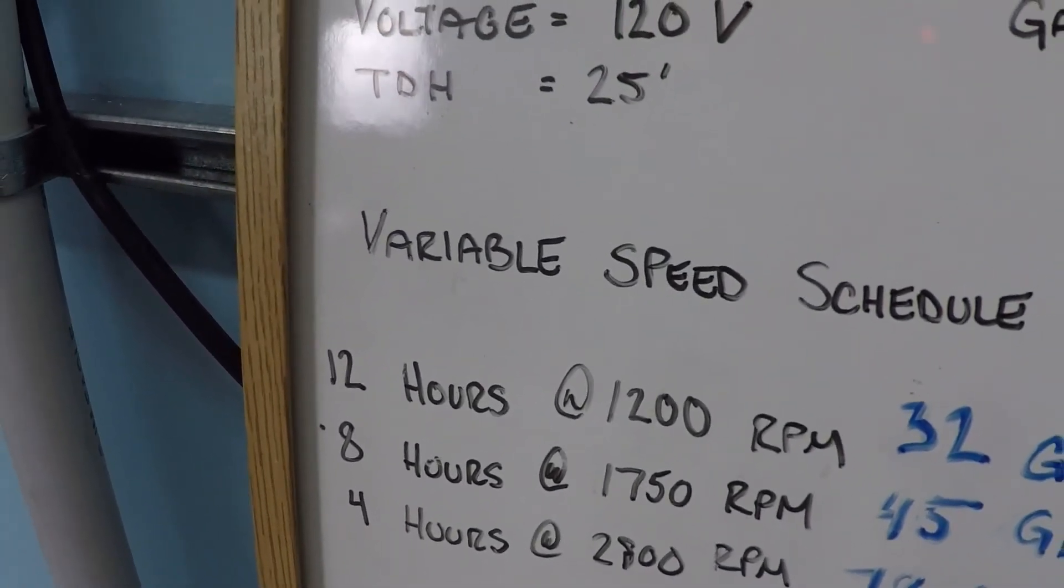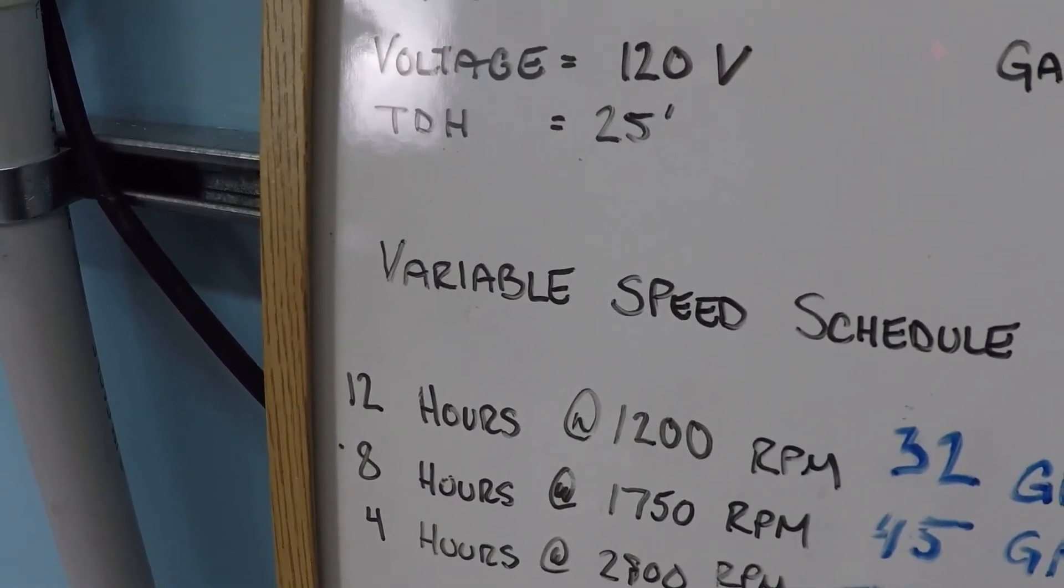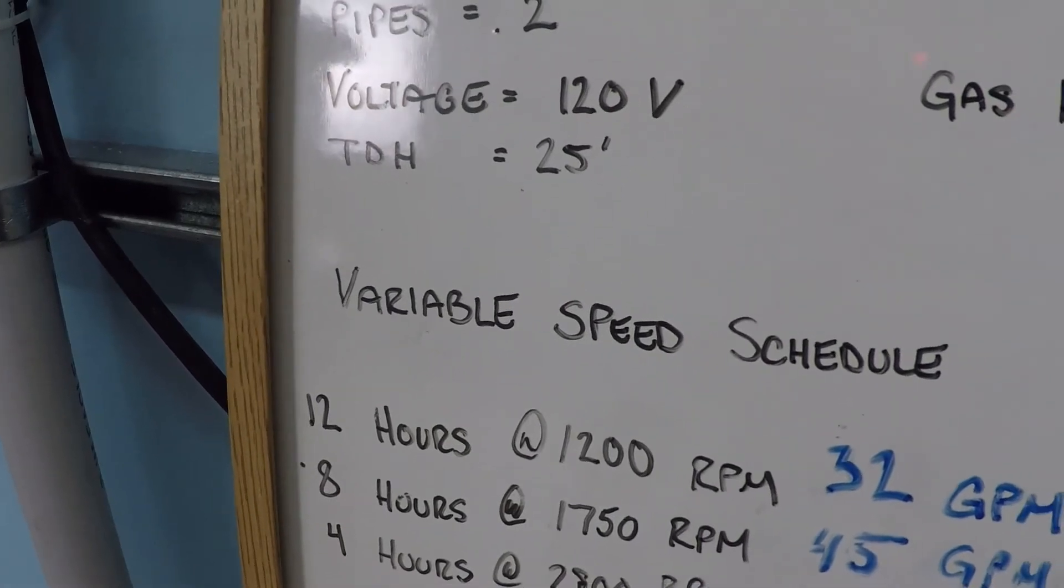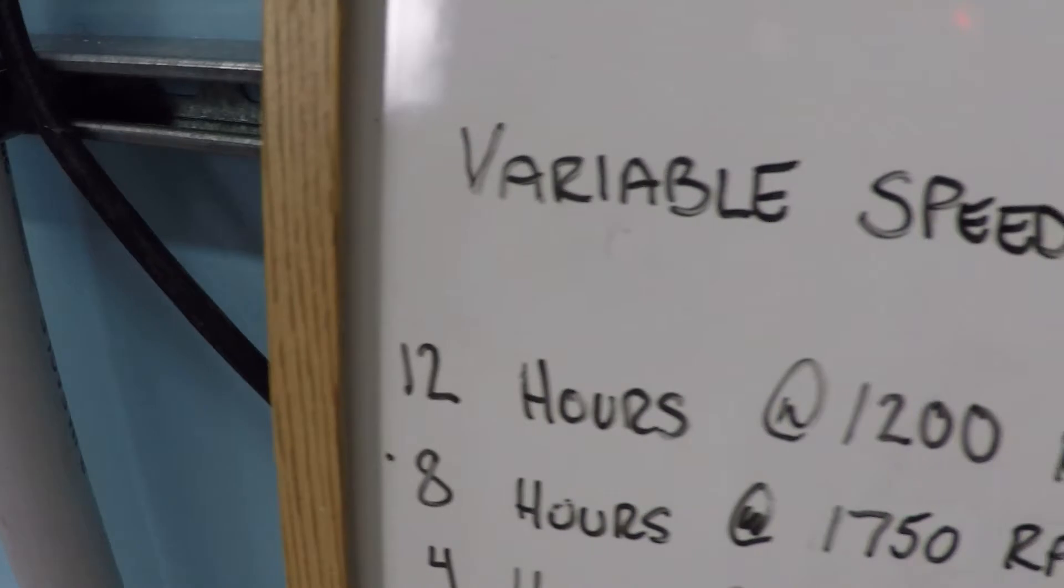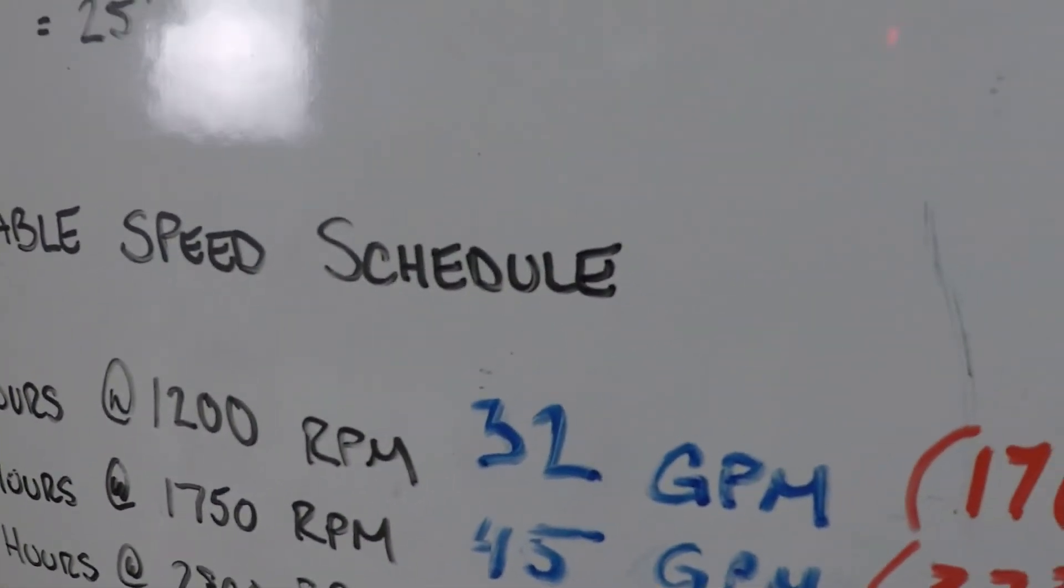It used to be with single speed pumps, turn off the pump for X many hours per day and that's how you save money. That is not how you save money with a variable speed pump. The way you save money is long periods of time at a very low RPM, because what you'll see here is you actually move quite a bit of water.